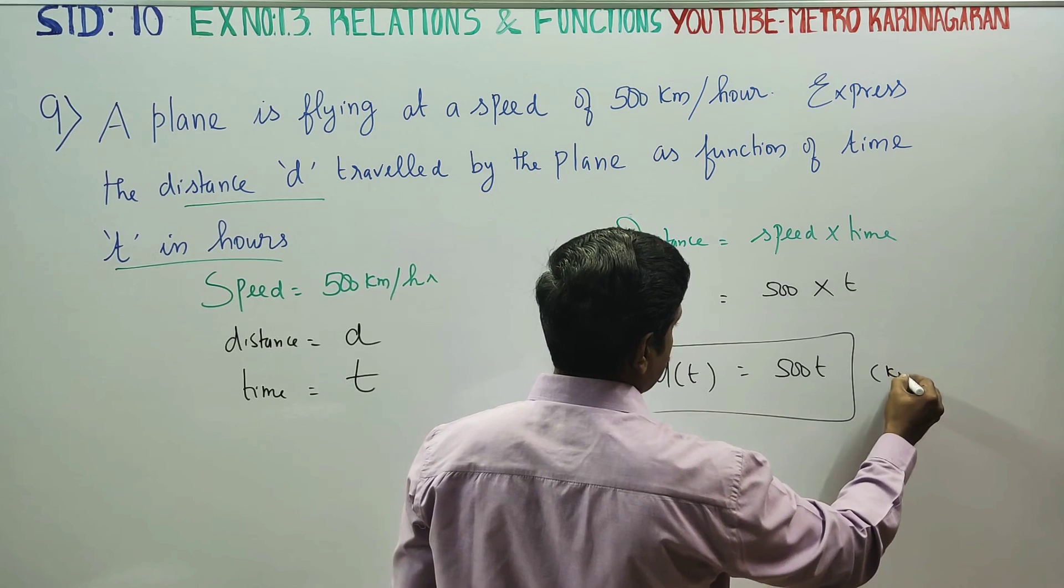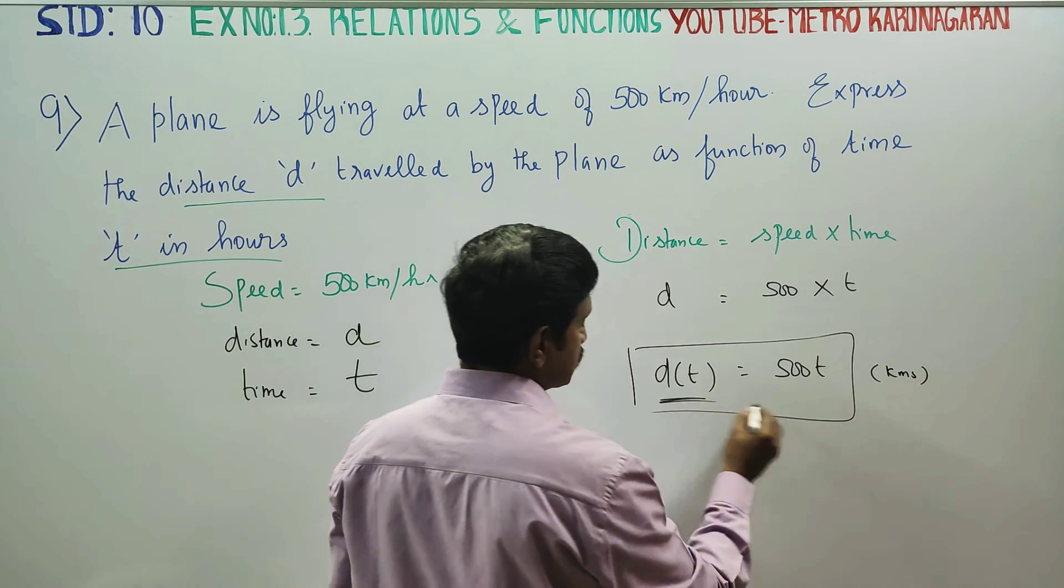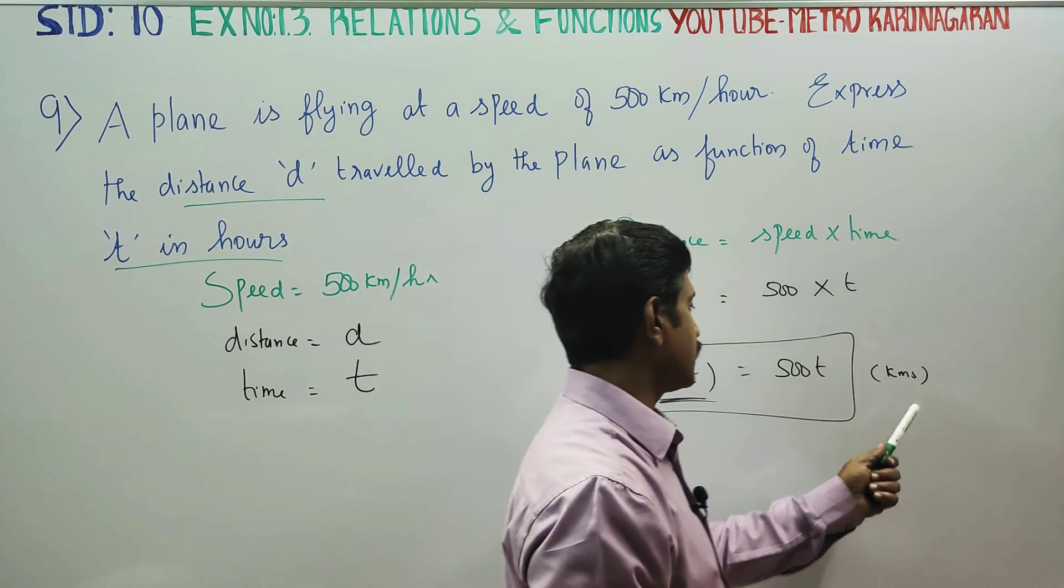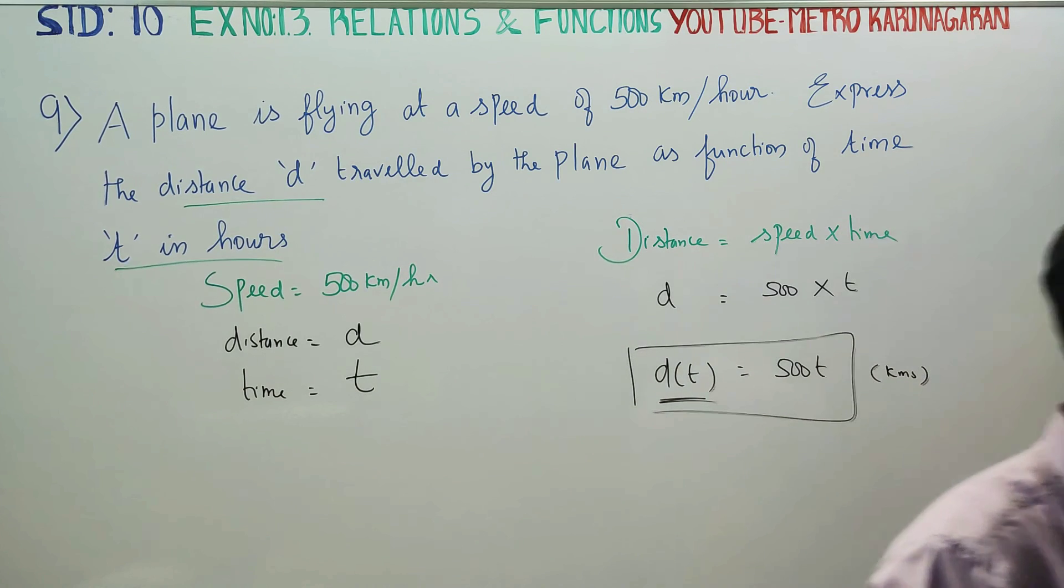The units, kilometers, is going to be the distance. Because this is distance, answers will be in kilometers. And function of t is equal to 500t. 500t is your final answer.